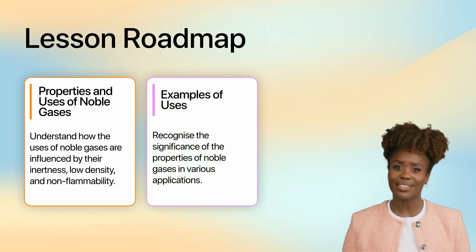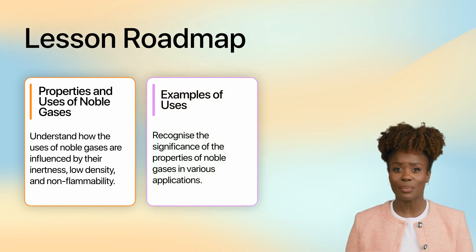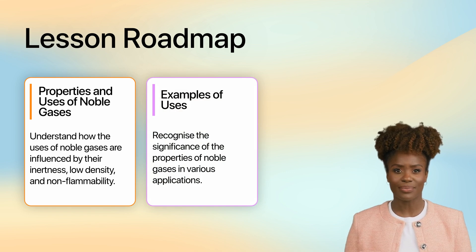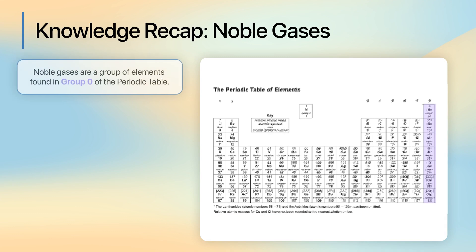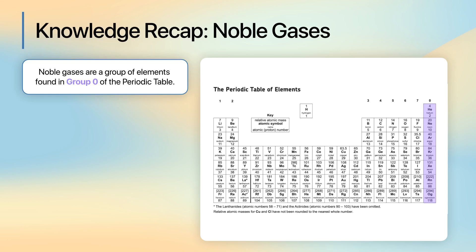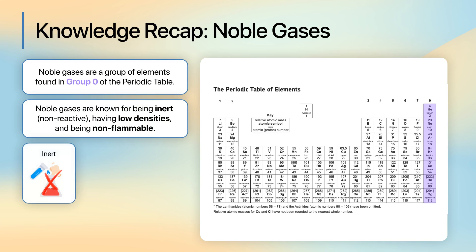Secondly, we will recognize the significance of these properties in various applications. So far, we've talked about noble gases and their properties. You've learned that noble gases are a group of elements found in Group Zero of the periodic table and are known for being inert, which means non-reactive, having low densities, and being non-flammable.